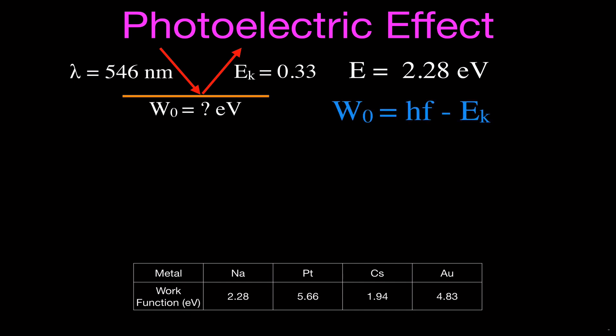So, we said our equation was that the work function is equal to hf, the energy of the light, minus the kinetic energy, and we can just plug those two values in, and you can see that the answer becomes that the work function is 1.95 electron volts. That's the work function, this value right here.